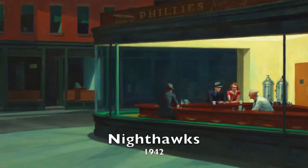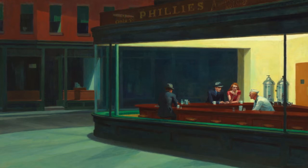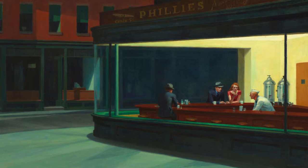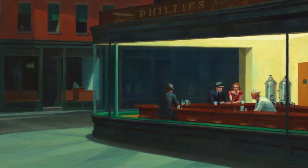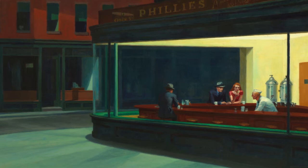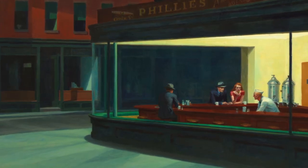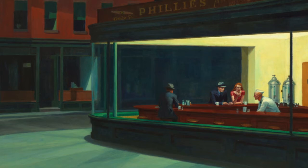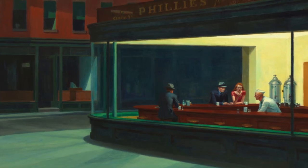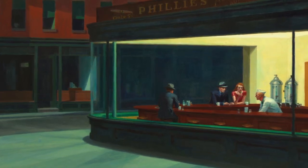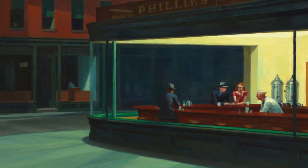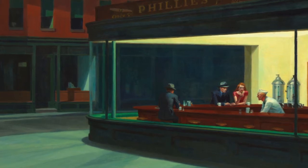Hopper said that Nighthawks was inspired by a restaurant on New York's Greenwich Avenue where two streets meet. Though his description is simple enough, the art world has long discussed the true meaning behind this famous work. Josephine, Hopper's wife, described Edward's painting process as taking about a month and a half for this picture, and stated that both she and Edward were used as models — Josephine as the female subject, and Edward using his own reflection in a mirror, painted as one of the male subjects.